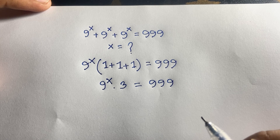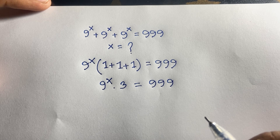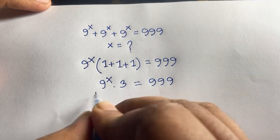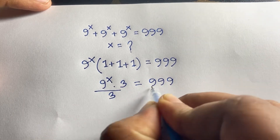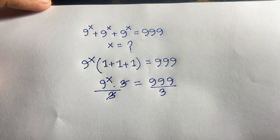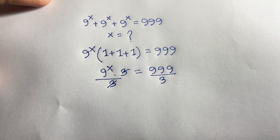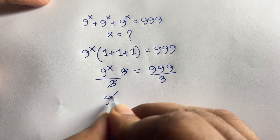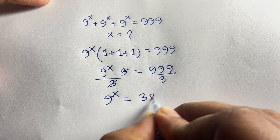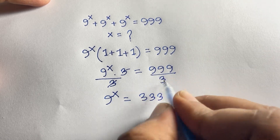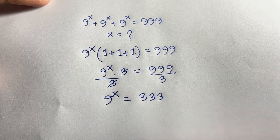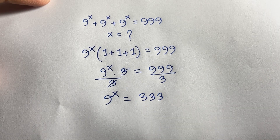Then, if I divide both sides by 3, these 3s cancel. And we find out that 9 to the power x is equal to 333, since 999 divided by 3 equals 333.